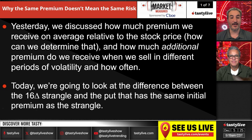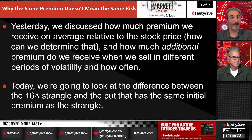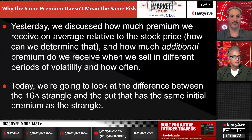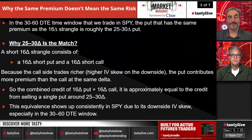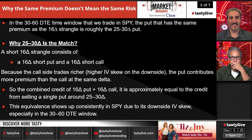Here we're going to look at the difference between a 16 delta strangle and a short put where the same premium is being sold. A lot of questions we get are: should I sell the same premium option, or look for the same amount on an iron condor in stock XYZ versus another one? That's kind of where we're going — looking at the same amount of premium.